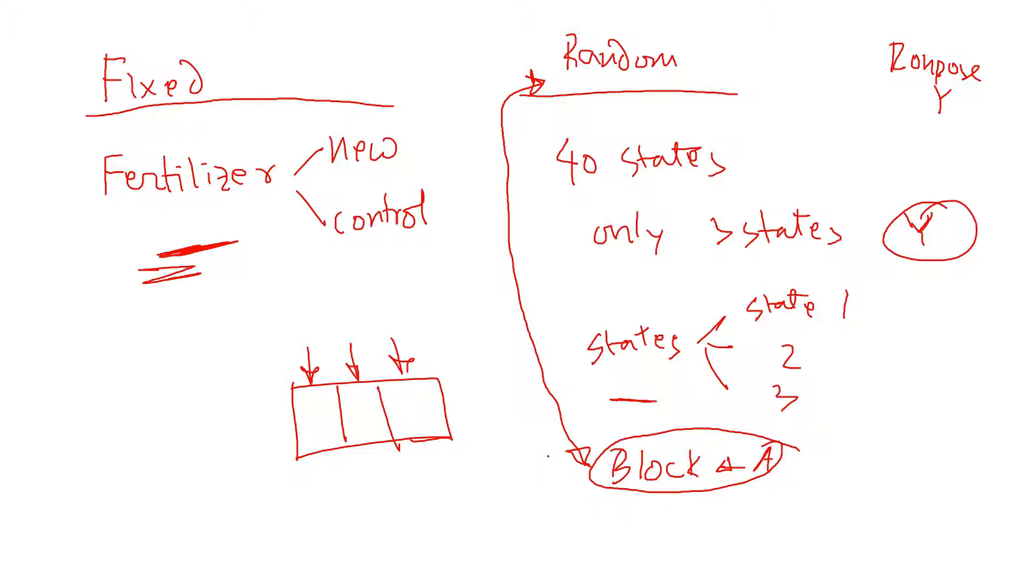You can think of it like that. Now, for example, if we have only two states - say Wisconsin and Iowa - and you only talk about Wisconsin and Iowa, then this conclusion would be generalized over the entire United States. Now in that case, if you only test on two fixed states, then it becomes a fixed factor.